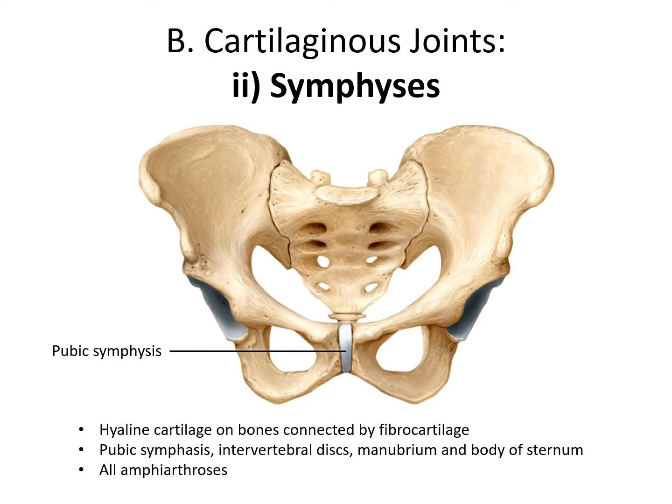In a symphysis we do have movement but not a whole lot — these are amphiarthroses. We can have hyaline cartilage making direct contact with the bone, but fibrocartilage connecting that hyaline cartilage. The pubic symphysis between the pubis bones is broken down partially during childbirth — just before delivery the fibers connecting the two pubis bones weaken to allow the hip to expand, and in some cases the pubic symphysis can actually be broken, which is rather painful. We also have flexible intervertebral discs between the vertebrae, and connections between the manubrium and the body of the sternum that can flex slightly during heavy breathing.